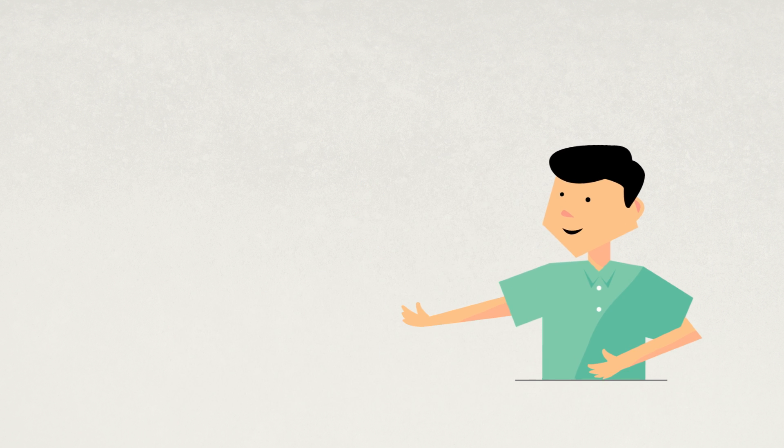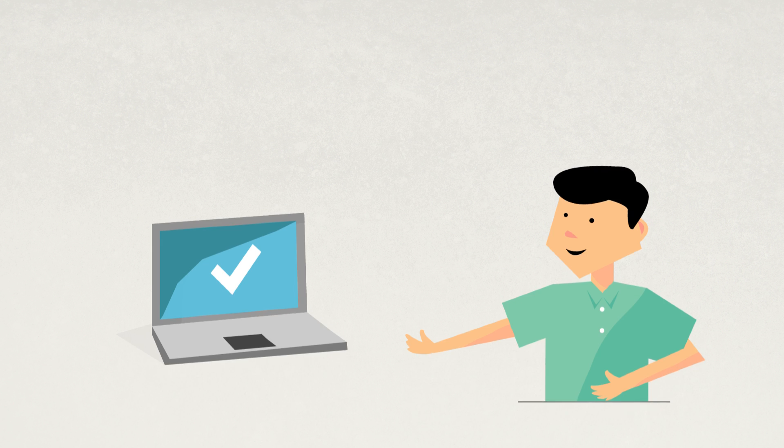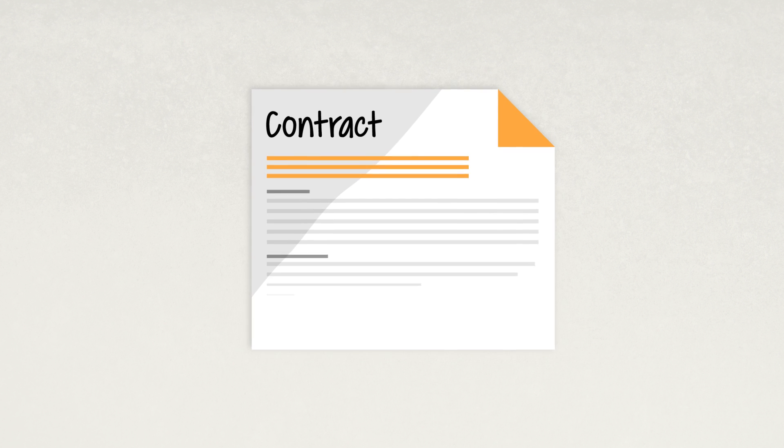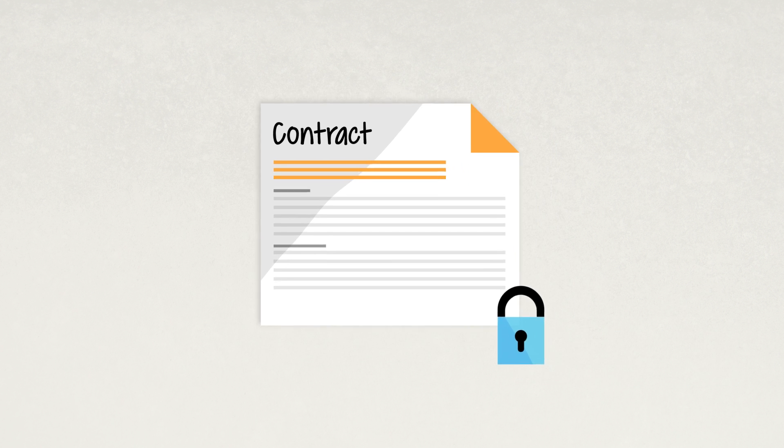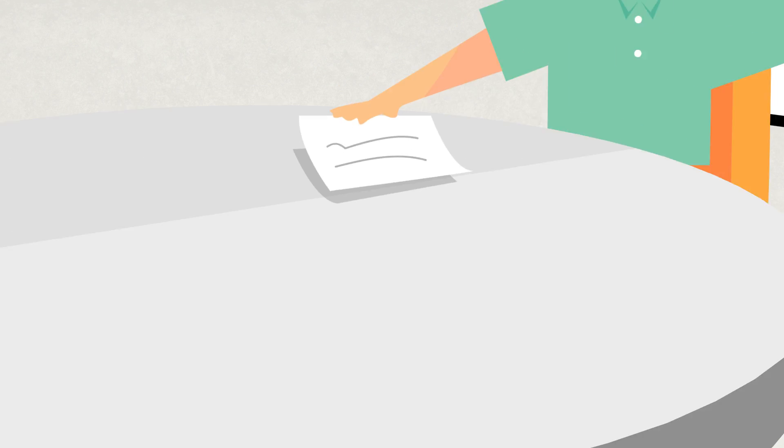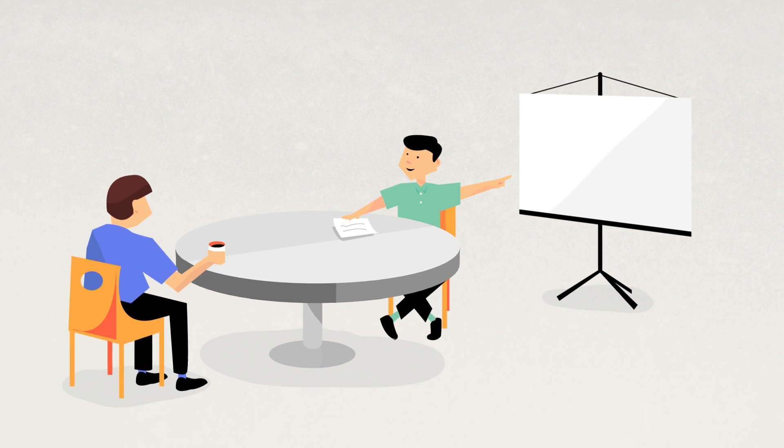but wouldn't it be better to have the program than a book describing it? Number three, customer collaboration over contract negotiation. Sure, you'll want to start out with some initial guidelines, but instead of locking customers in a cage by defining the exact details of the project before it starts, teams and customers should collaborate to find the best solutions.